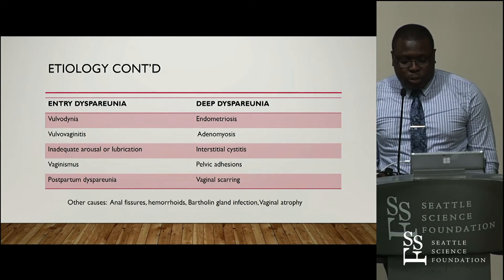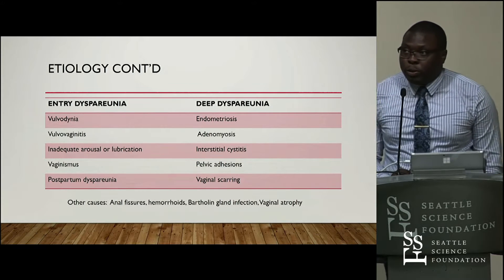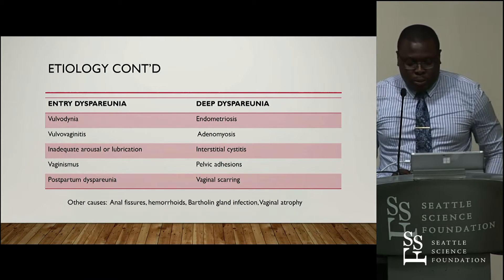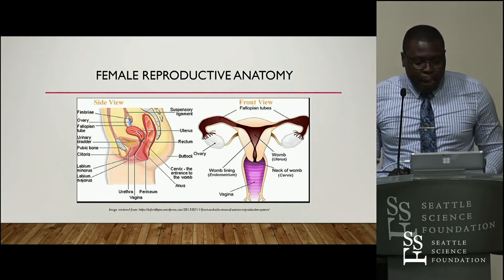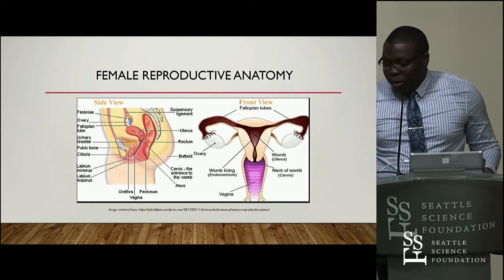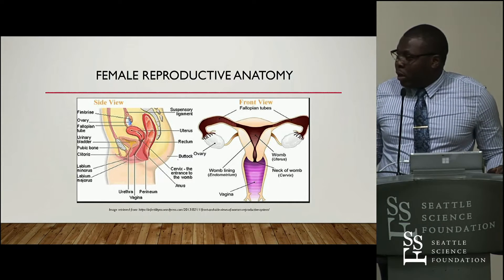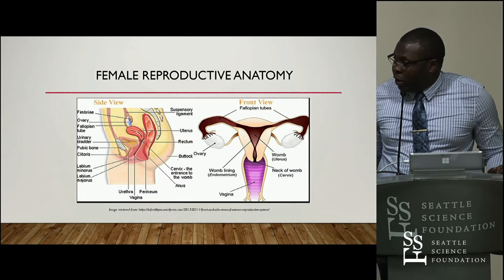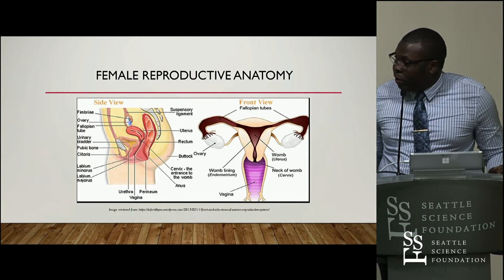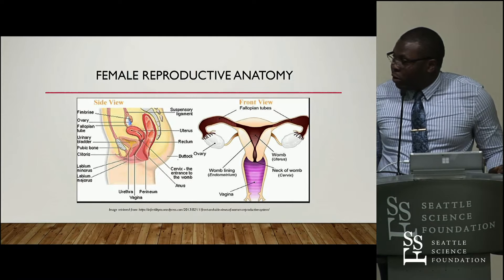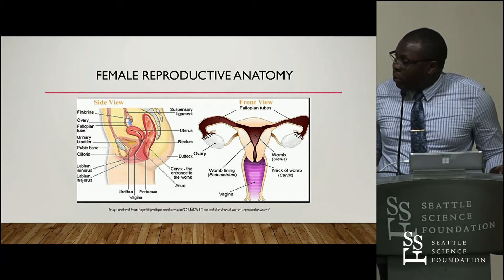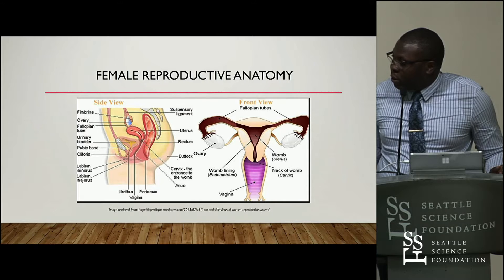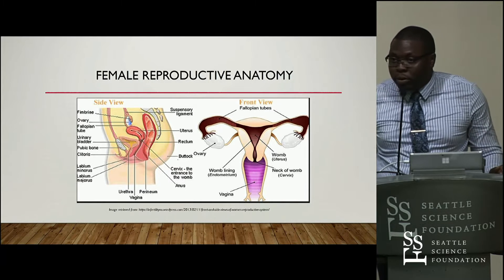It's a multifactorial disorder, so you want to be on top of it — each patient is definitely going to be different. For a basic anatomical review, as you can see we have a mid-sagittal section of the female pelvis showing the vagina, uterus, vaginal wall, and rectum. There's also an anterior view showing the vaginal wall and cervix, just to remind us of the basic anatomy.